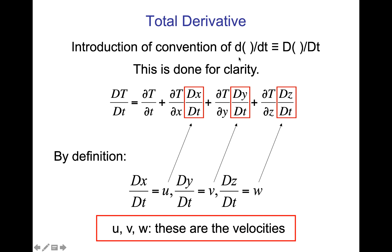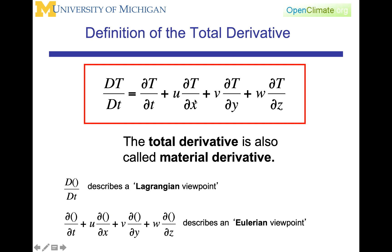So this is done for clarity. This is simply a way of notation of saying, here is the total derivative. We are not just looking at the partial derivative. This is the definition of the total derivative, which is also called the material derivative, and these two terms will be used interchangeably. And just to make the point, the material derivative and the total derivative are one and the same.